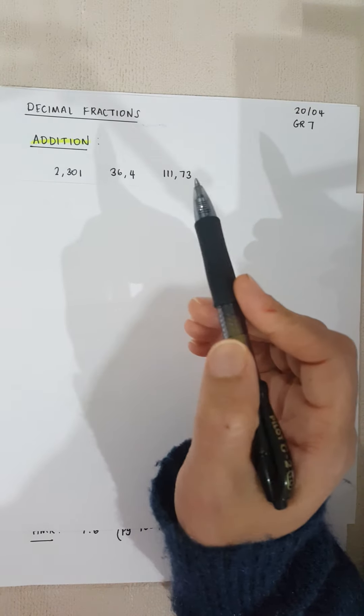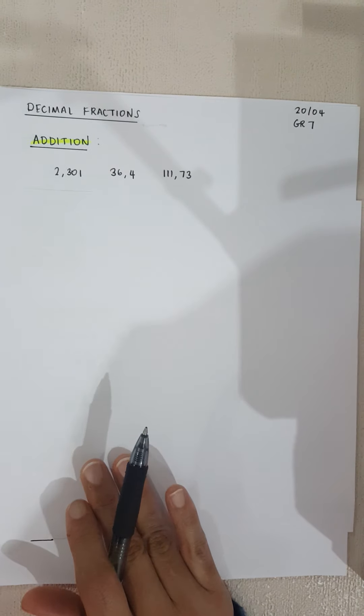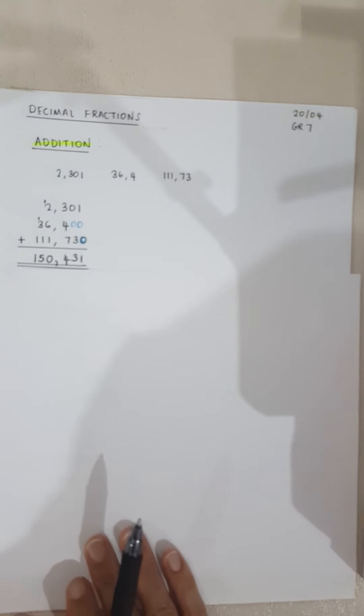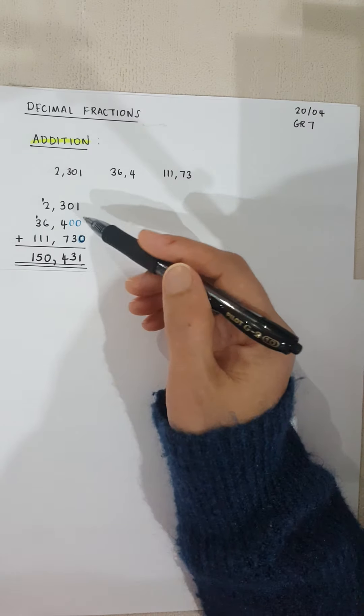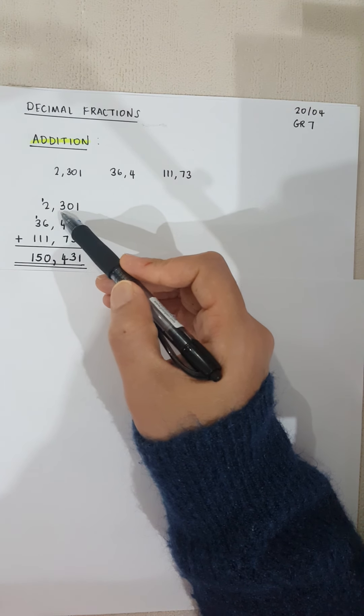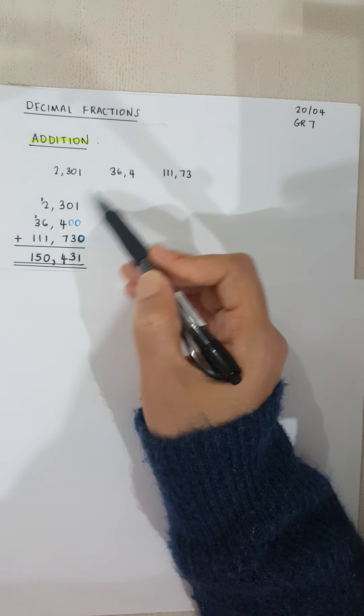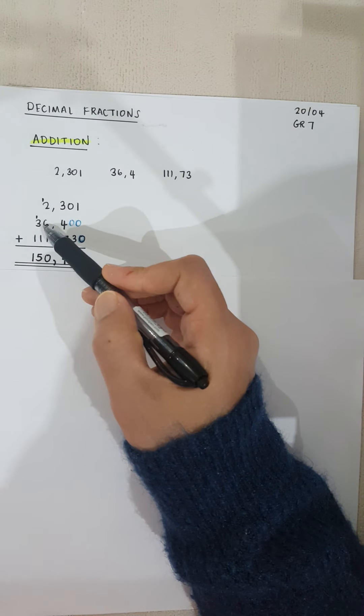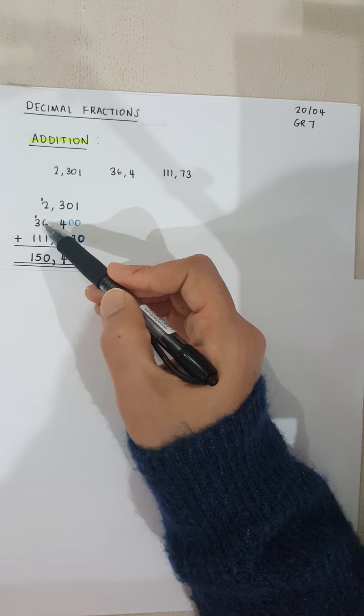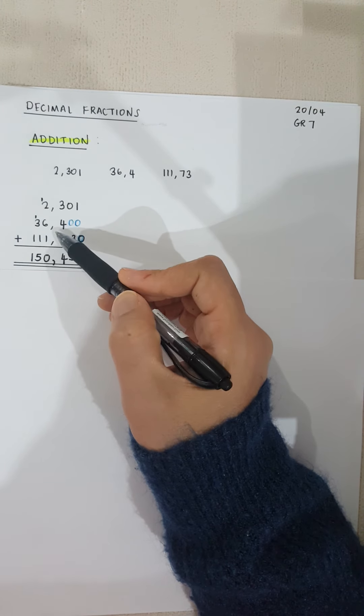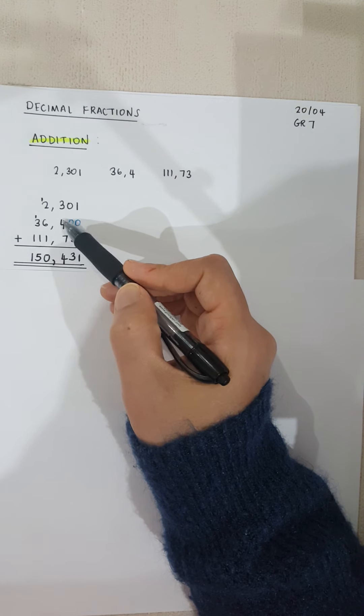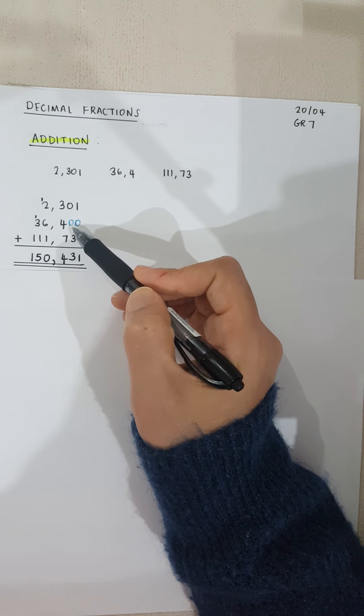The question says we must add the three numbers up together. So what we're going to do is like our normal column method. We write down 2.301, then we write down 36.4. Look, I have aligned the units and the tens there together. 36.4 goes under the three there.